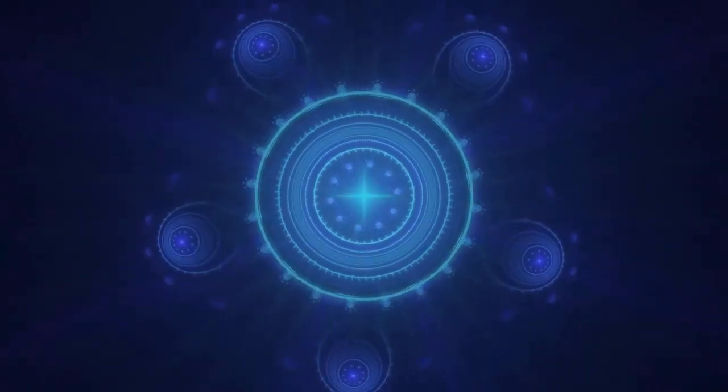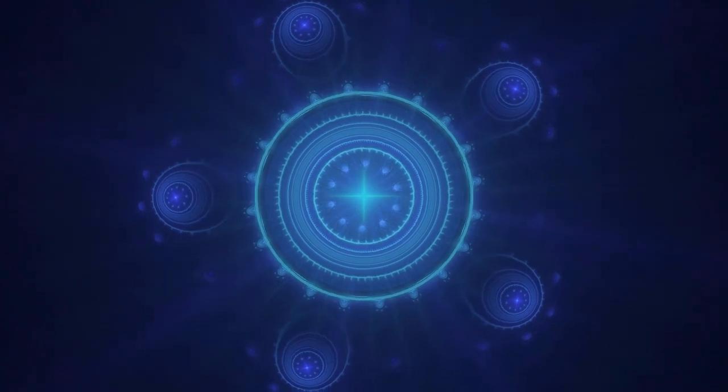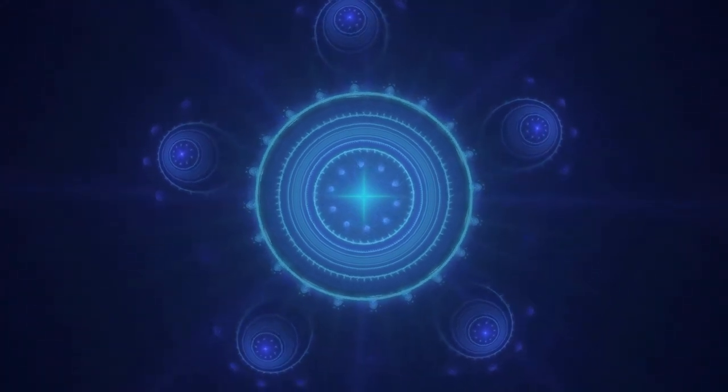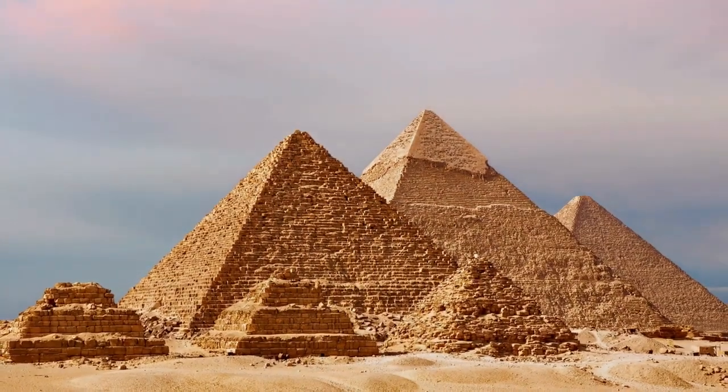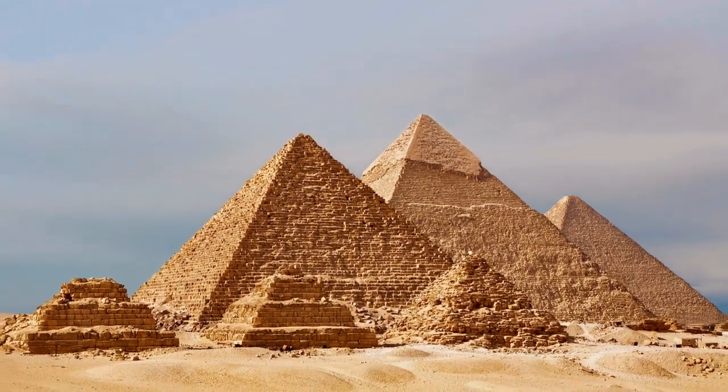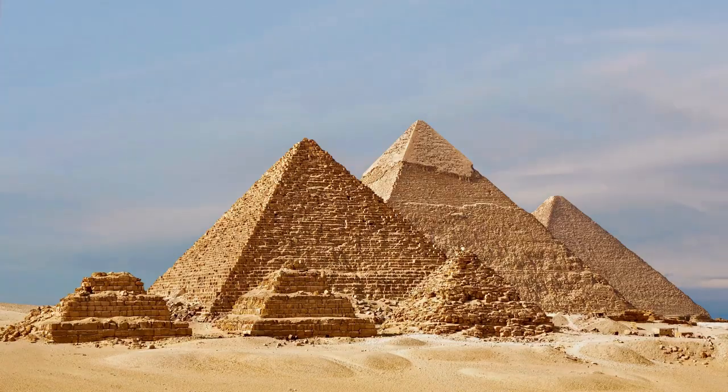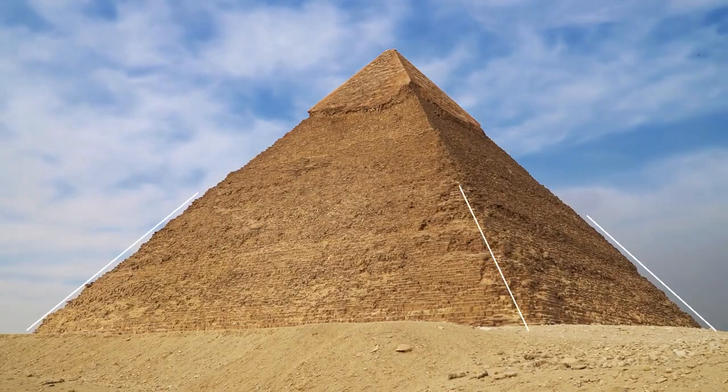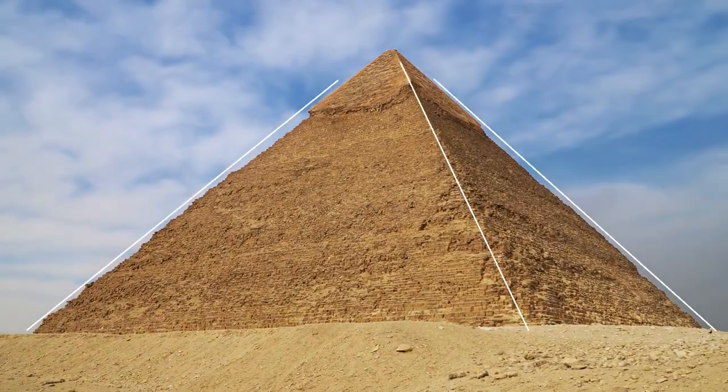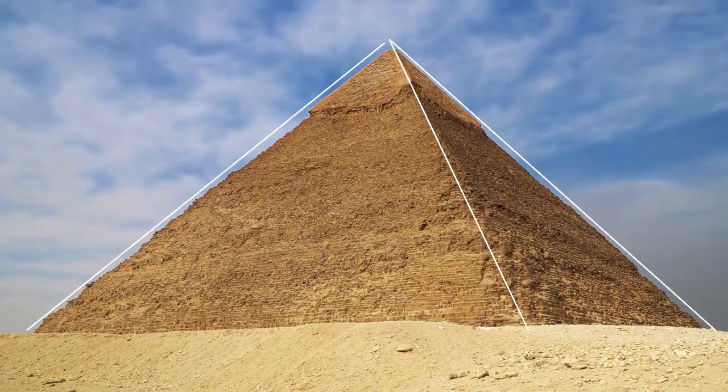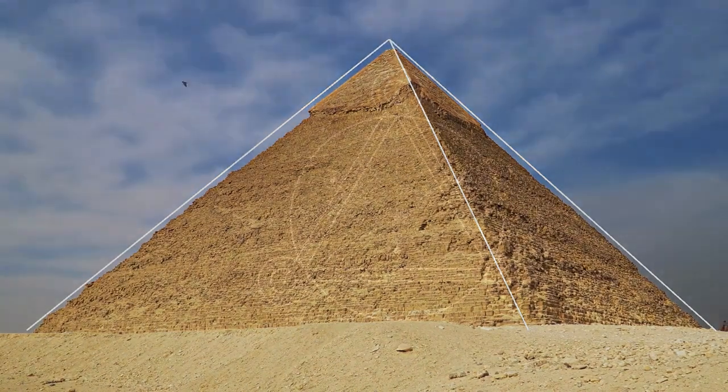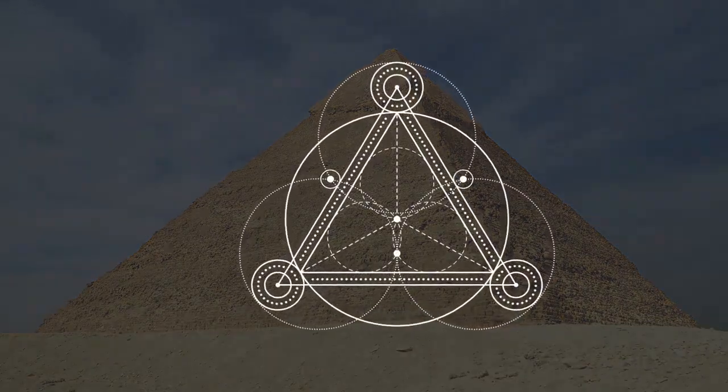Among the earliest and most prominent examples of sacred geometry in action are the pyramids of Giza in Egypt. These are masterpieces of geometric precision that have stood for thousands of years. The precise alignment of the pyramids with celestial bodies and their proportional perfection indicate that the ancient Egyptians knew about sacred geometric principles.